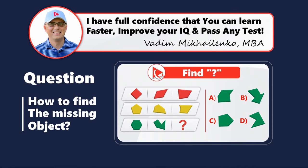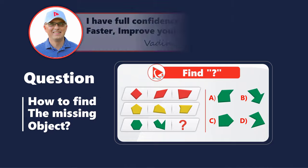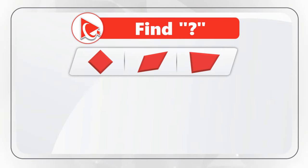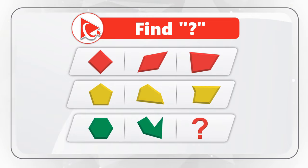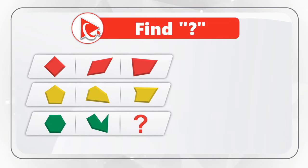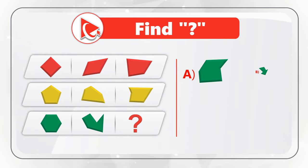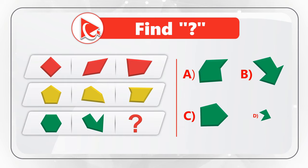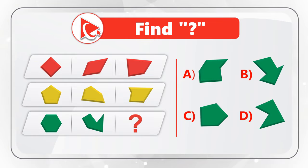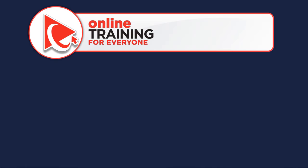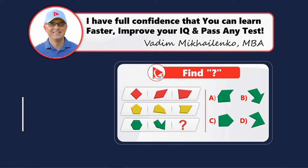Here's another tricky problem which tests your critical thinking and analytical skills. You're presented with eight objects and object number nine is missing. You need to find the pattern and select the ninth object out of four possible choices: A, B, C, and D. Take a close look to see if you can come up with the answer. I'm moving forward to share with you my version of the answer.